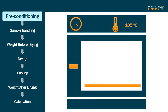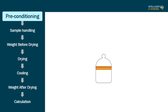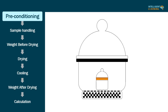First step: preconditioning. Set the temperature of the drying chamber as per the method of analysis. Maintain the temperature of the drying oven at plus or minus 2 degrees Celsius. After reaching the desired temperature, dry the glass stoppered weighing bottle for about 30 minutes at the same temperature. Remove the glass stoppered weighing bottle from the drying chamber and cool to room temperature in a desiccator.